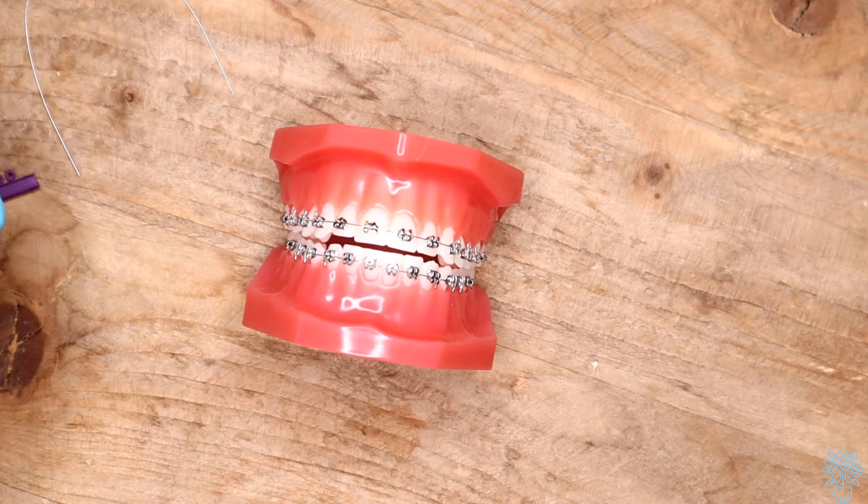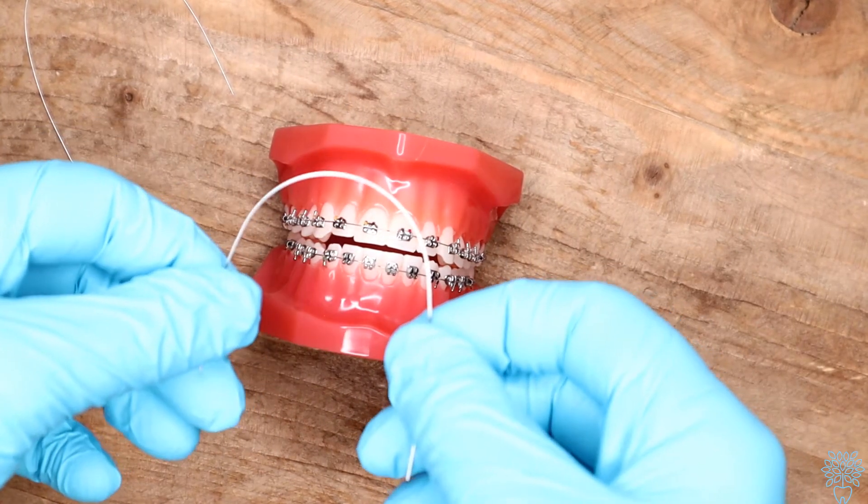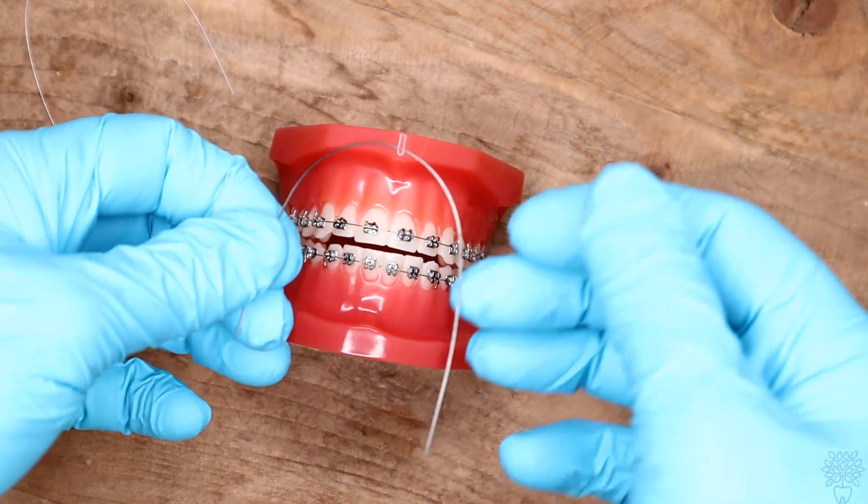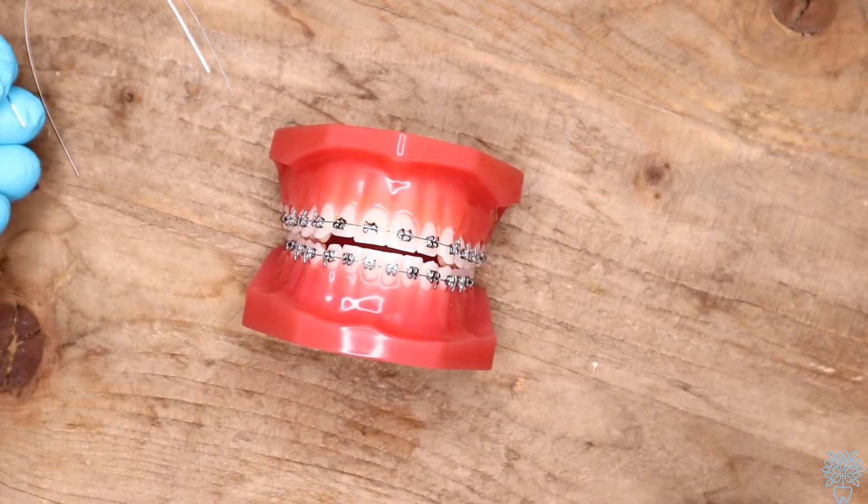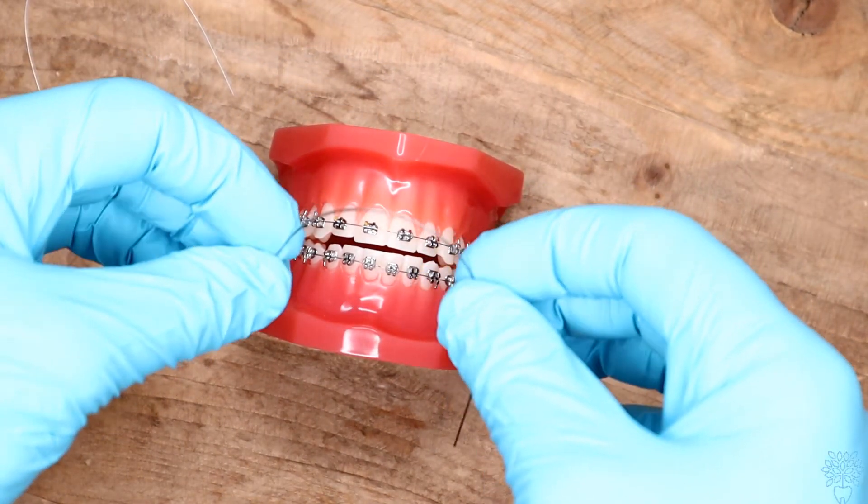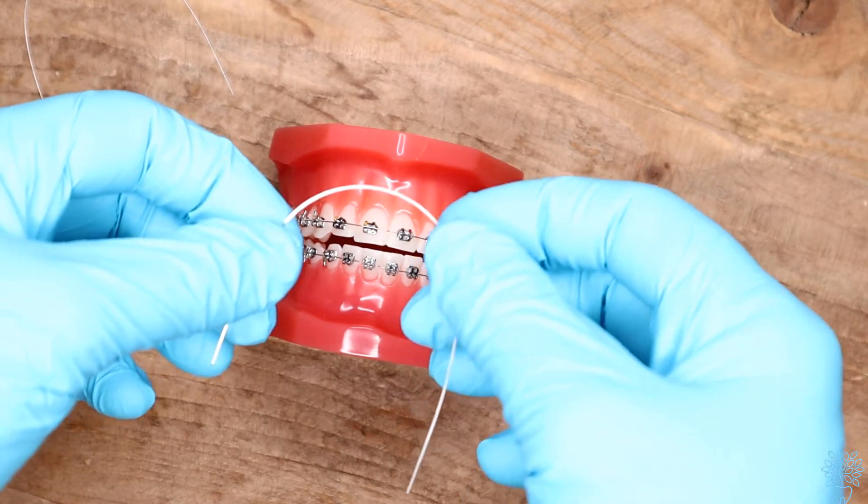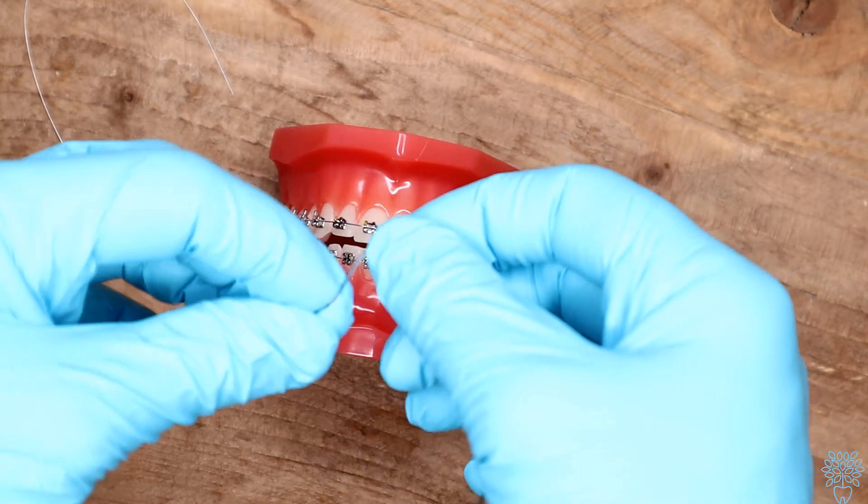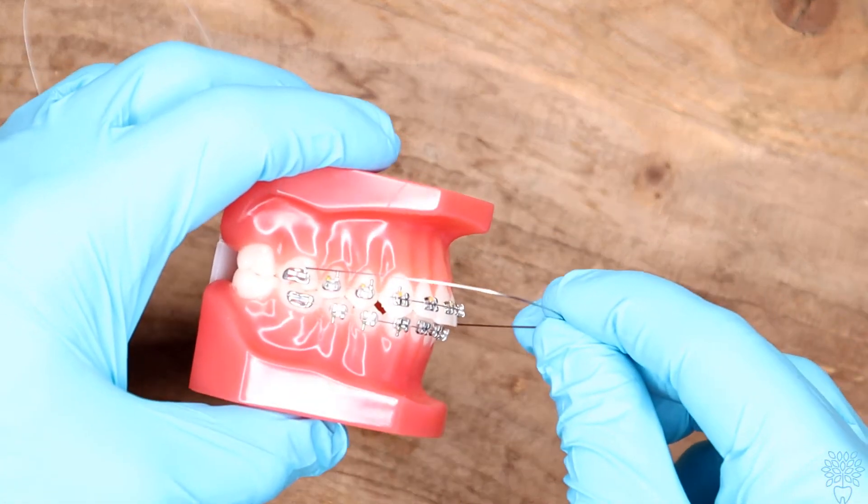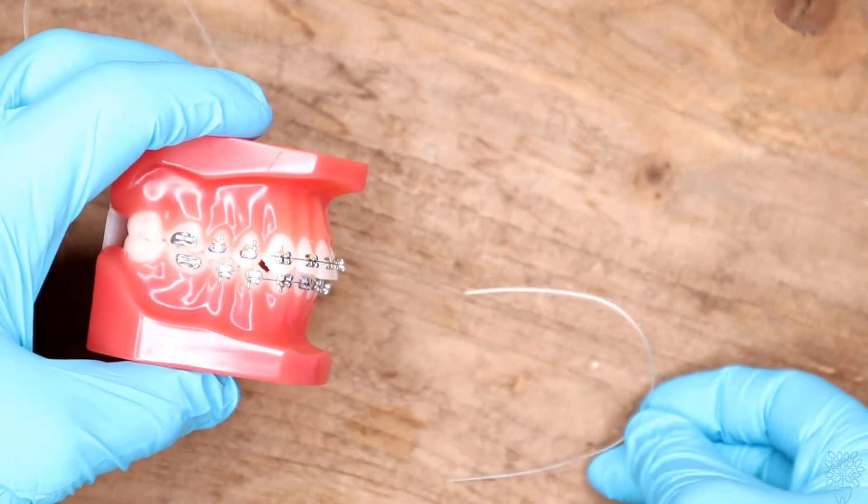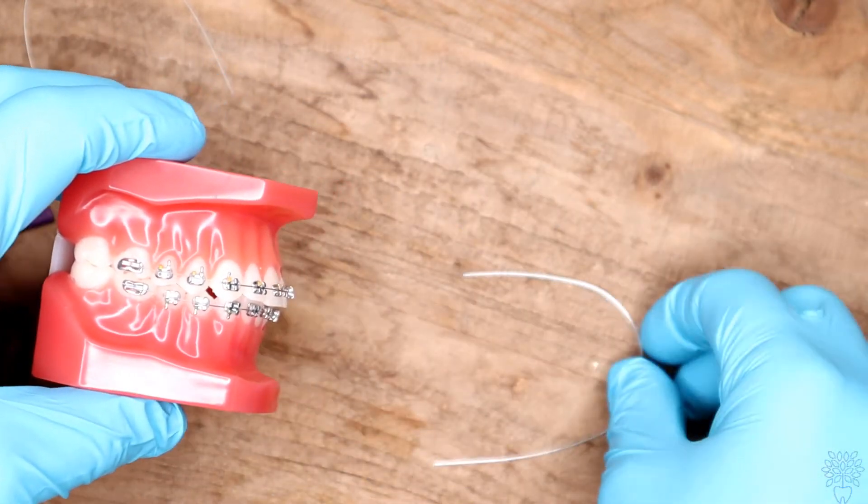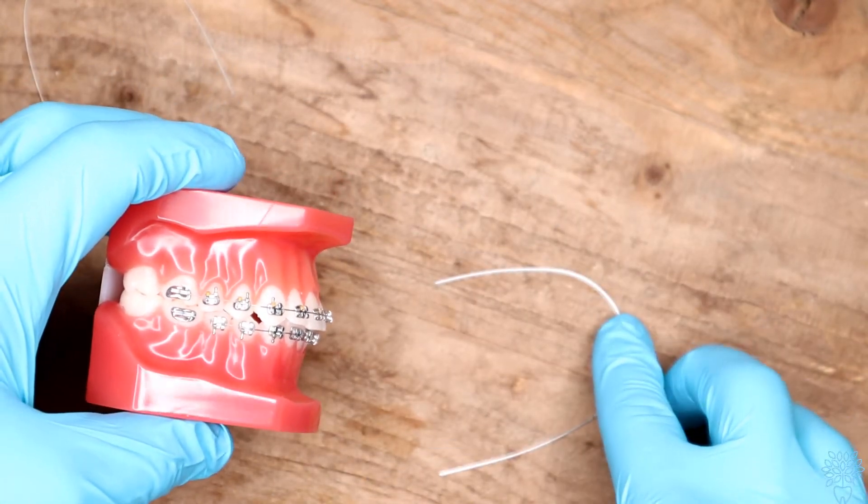Then you start getting to these little bit thicker wires. And these are called rectangular wires. Same thing if you do a cut through section, it would look like a rectangle. But you can see it's in the same shape as the other wires, but it's just a little bit thicker. So this actually has to do with the torque of the teeth. So if I were to put this in this mannequin here, I could torque the teeth. So that means the front and back portion you can do with this type of thick wire.